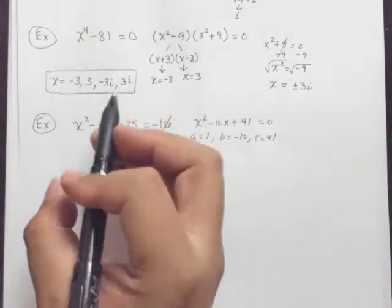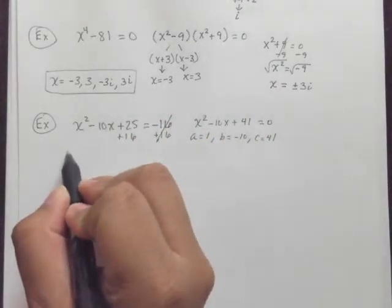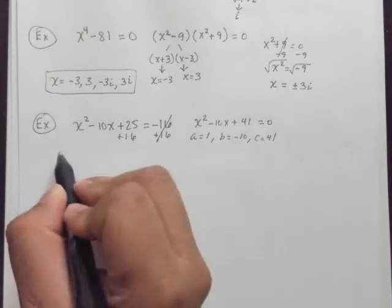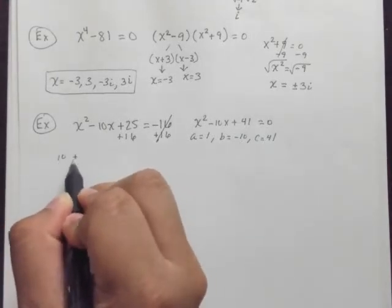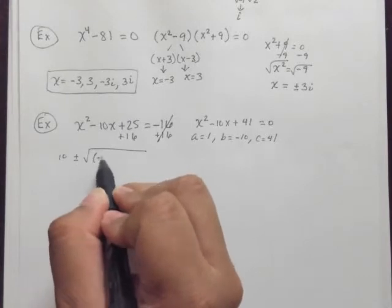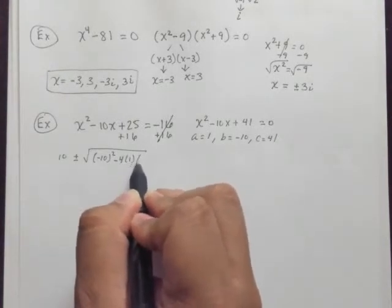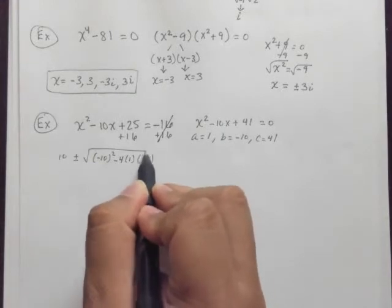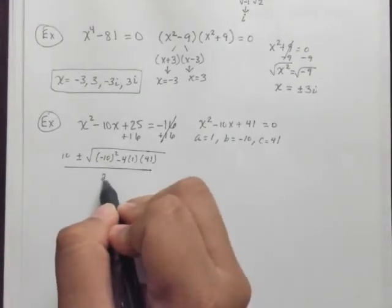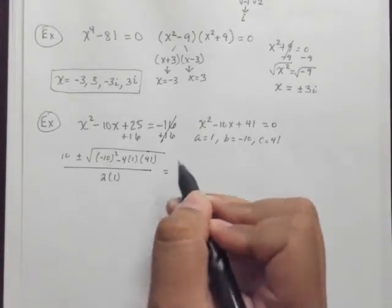All right, so opposite b. Opposite b, we get the opposite of negative 10, which is positive 10, plus and minus the square root of b squared. So negative 10 squared minus 4 times 1 times 41, all over 2a, which is 2 times 1. So in this case,